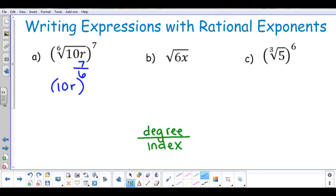In letter (b), my base will be 6x. I have no indicated exponent, so I have a 1 in my numerator, and I have no indicated index either, which means that this is a square root, so it has a denominator of 2. So I have 6x to the 1/2.